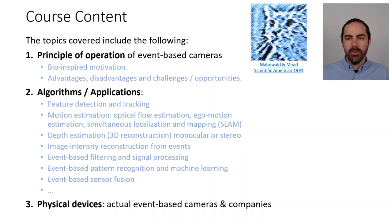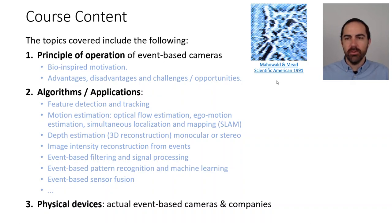On the top right is the first image of a cat produced with a prototype camera designed by Misha Mahowald and Carver Mead at Caltech around 1991. It's the spark that showed a new way of acquiring and processing visual information — a milestone in neuromorphic engineering.